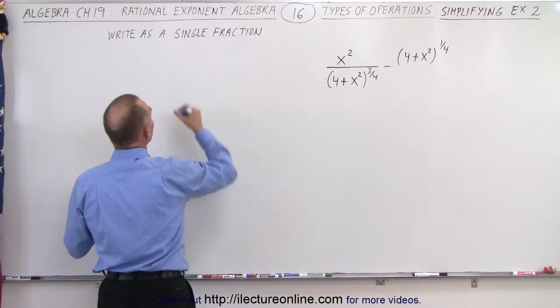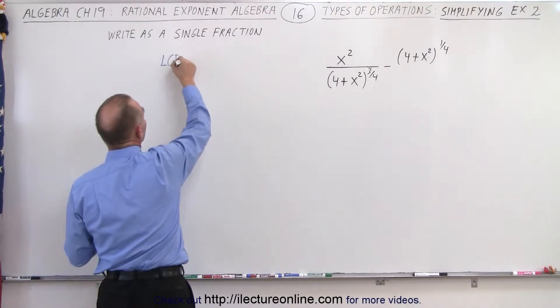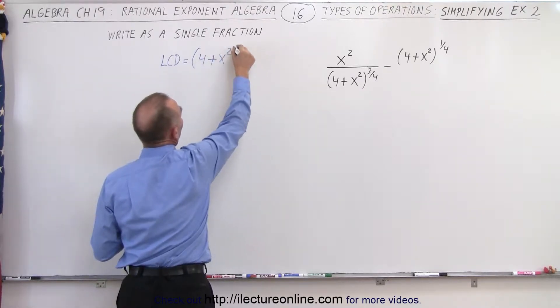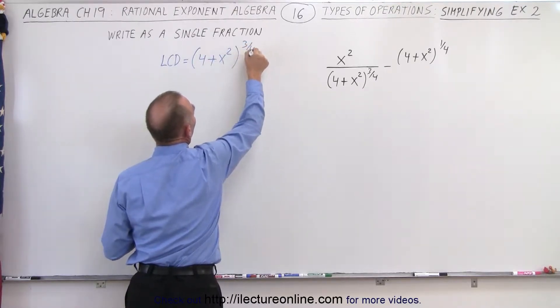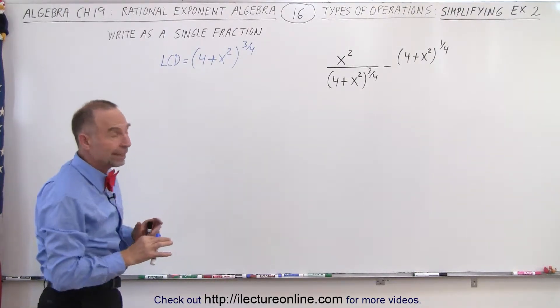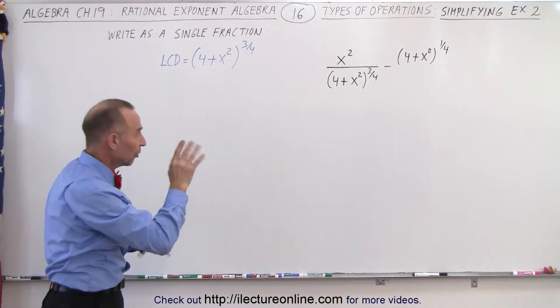So the LCD in this case is equal to the quantity (4+x²) to the 3/4 power, which means any term that does not have that as a denominator needs to be changed so that the denominator does have that.